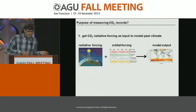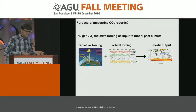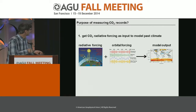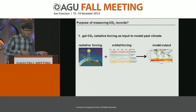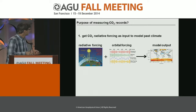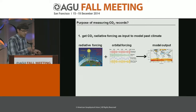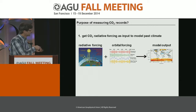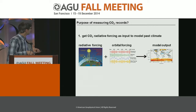So why do we actually measure CO2 on ice cores? A very simple reason is just to get CO2. Because CO2 is a major greenhouse gas, knowing CO2 in the past allows you to run climate models and use the radiative forcing and the orbital forcing to get a model output for past climates.